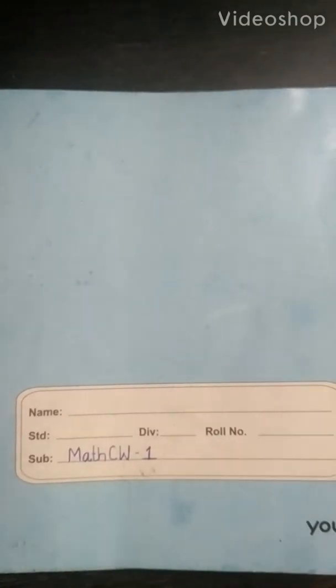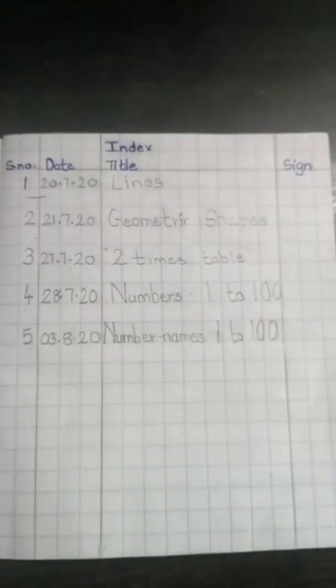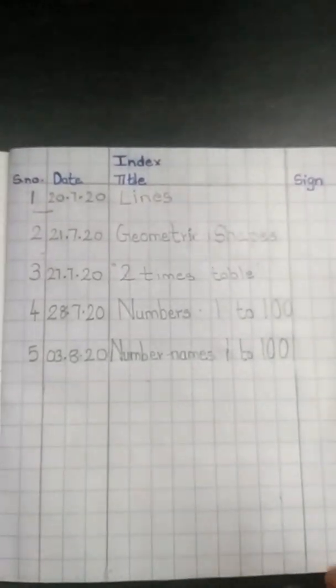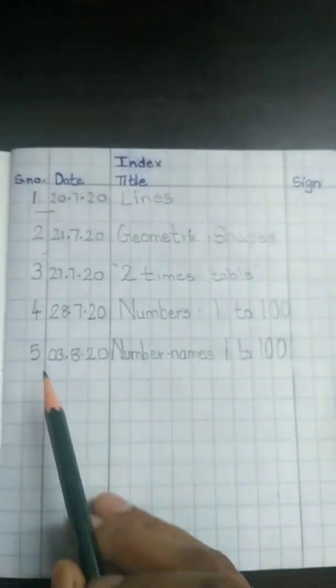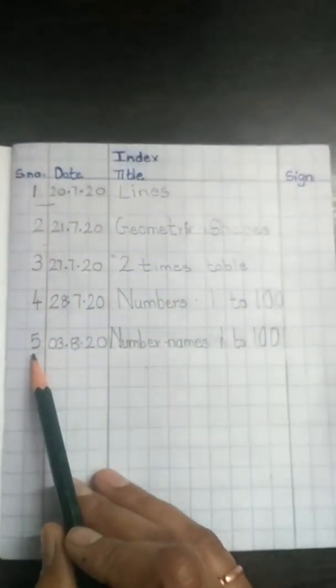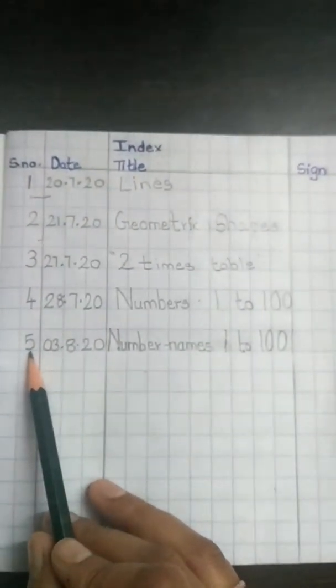Good morning children. So now let's see how to write number names in our Math CW book. When we start our new topic, we always start from the index page.